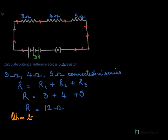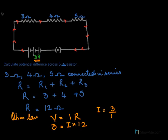Next, we apply Ohm's law in this circuit. Ohm's law is V equals IR. The voltage is 3 volts and the resistance in the circuit is 12 ohms, so the current I will be 3 over 12, which equals 1/4 amperes.